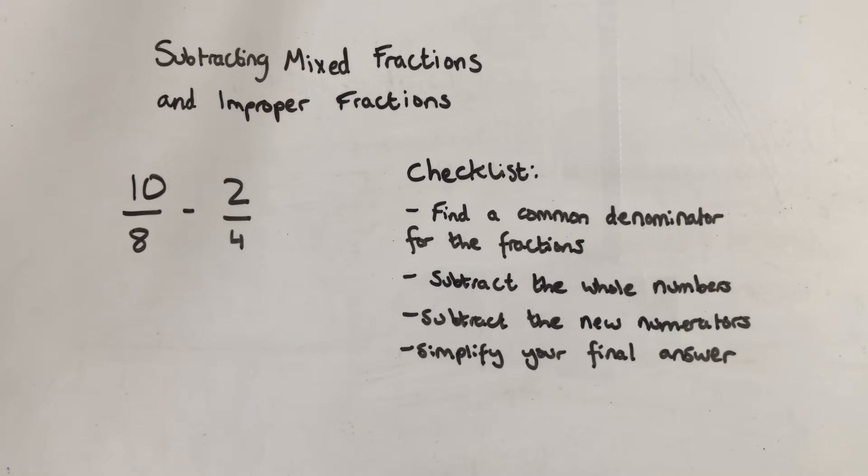So we're going to start with some improper fractions. I have 10 over 8, which means it's improper—it's top-heavy. There's more on the top than there is in the bottom. Take away 2 over 4, so 2 quarters.